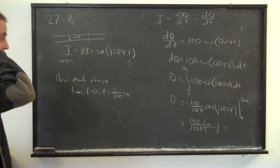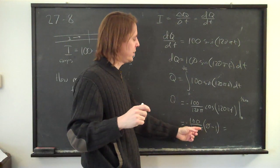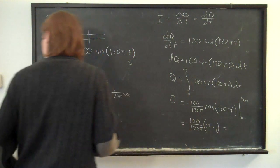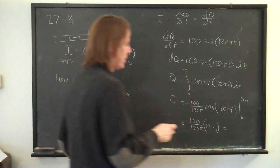Then it is, all it is, is one hundred divided by one hundred and twenty pi is the answer. And that comes out to zero point two six five.